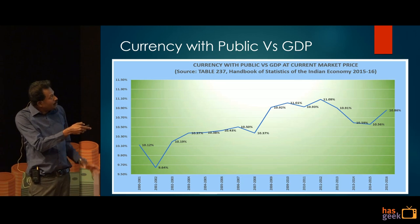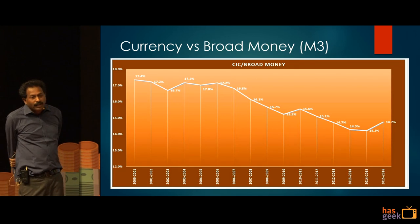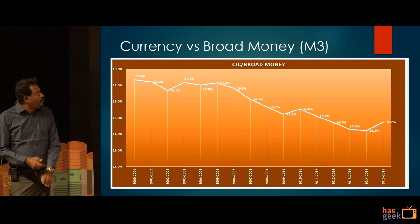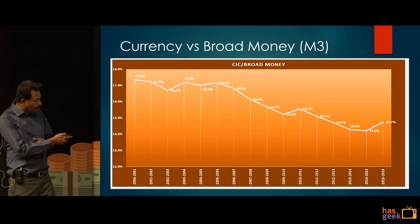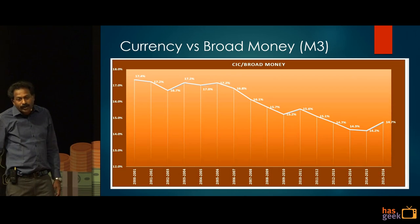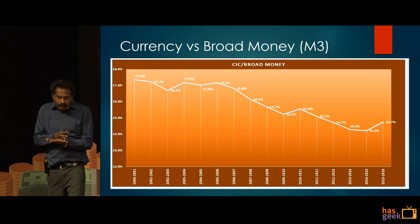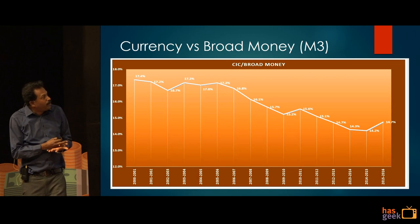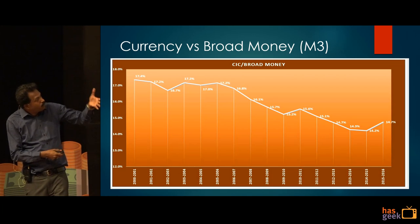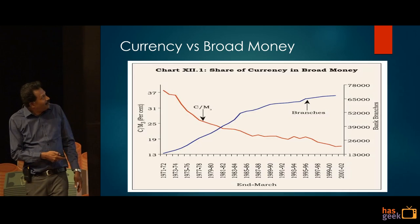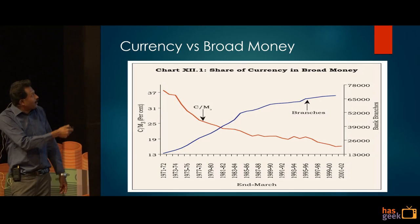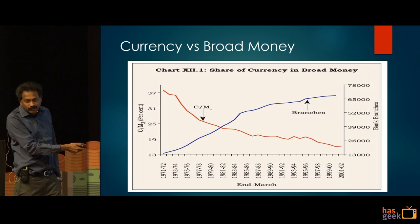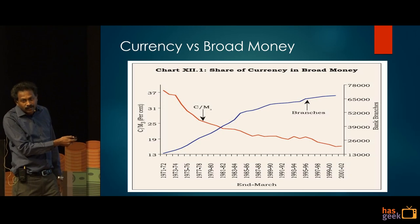Another issue: for the last five years the RBI has stopped publishing a graph showing currency versus broad money. Broad money is currency with the public plus savings and current bank accounts (demand money) plus fixed deposits (time deposits). Currency as a share of broad money has actually been declining — it was around 37 percent in 1971-72 and came down to around 17-18 percent by 2001-02, because more people now have bank accounts and are saving.